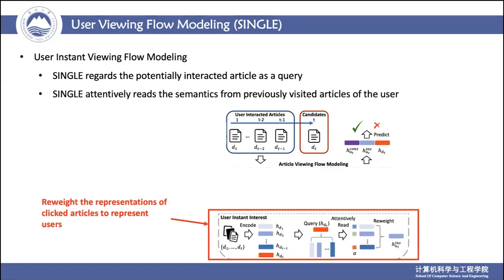When users browse articles, they often show interest in multiple topics. This instant interest reflects their quick preference while viewing articles. Sometimes users are also attracted by articles from different topics that can catch their curiosity, prompting them to further click and read. To understand and model this instant interest, SINGLE checks the viewing patterns of users. We regard the candidate article as a query and design an attention mechanism to capture the user interest from previously visited articles. The attention mechanism helps to predict which article a user might click on next by analyzing the semantics of these clicked articles.